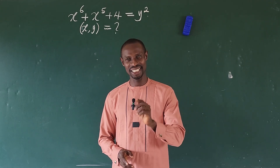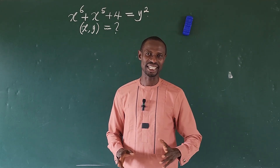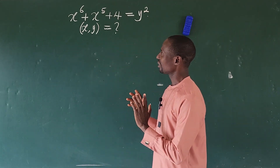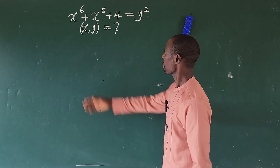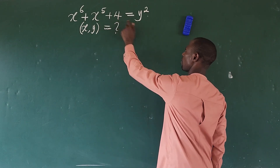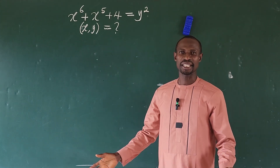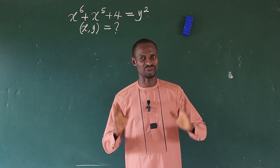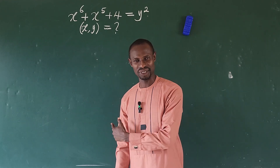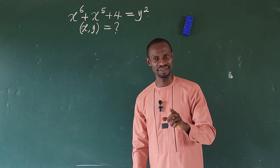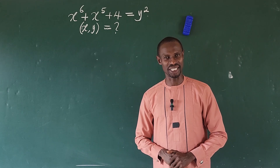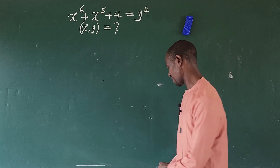Welcome to today's class. As I promised in my last video, today I'm going to release a very nice challenge question: x to the power of 6 plus x to the power of 5 plus 4 equals y to the power of 2. What are the pairs of x and y that will satisfy this challenge? Without much waste of time, let's go into today's challenge. If you're new here, don't forget to subscribe and turn on the bell notification button.